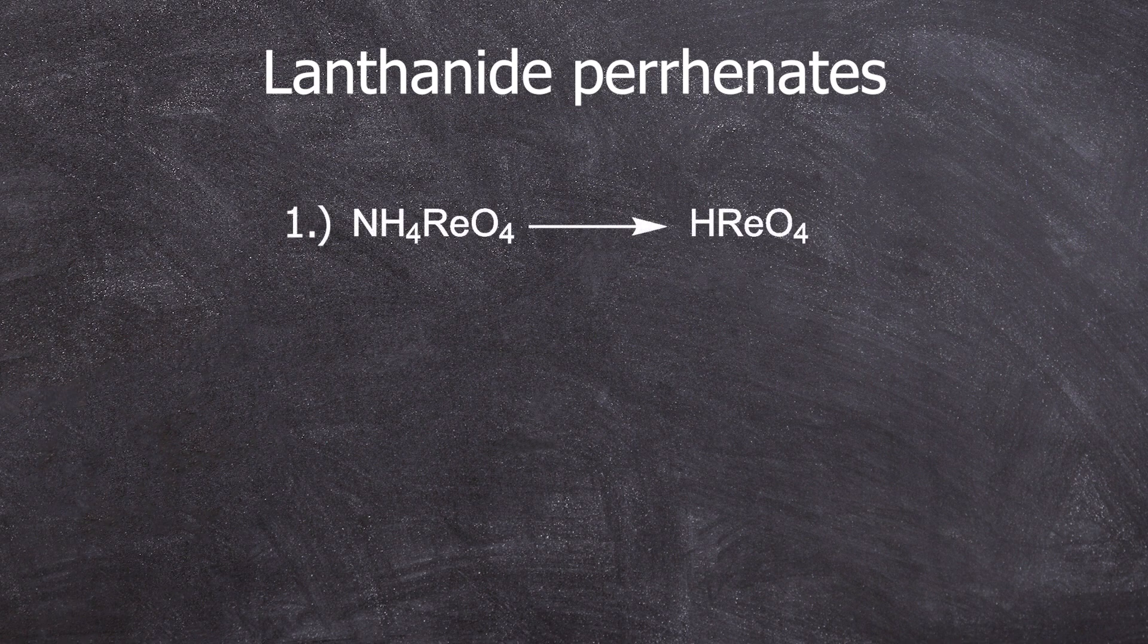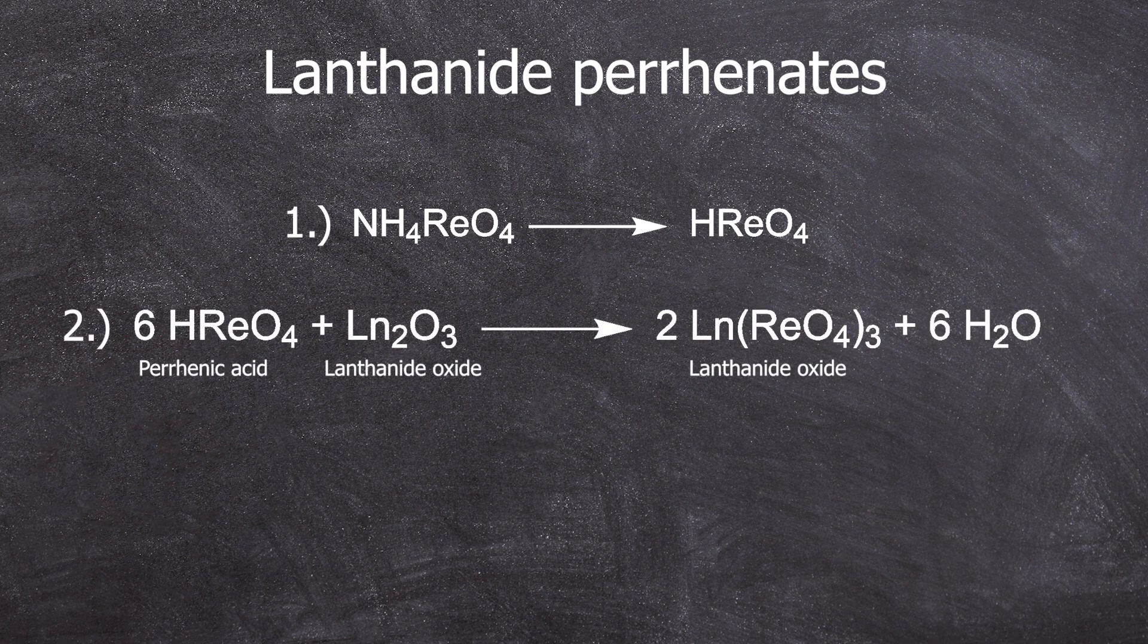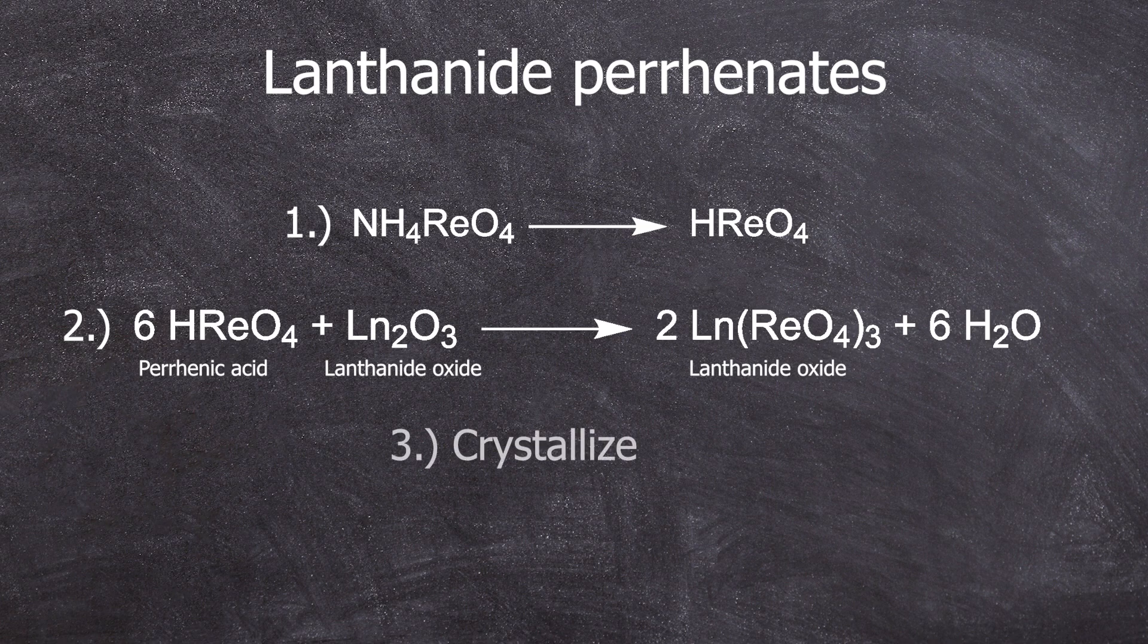Convert ammonium perrhenate into perrhenic acid. For that, we need to build a column ourselves and then convert the respective lanthanide oxide with perrhenic acid to the corresponding perrhenate. Let it crystallize and then determine the crystal structure via XRD. So let's go.